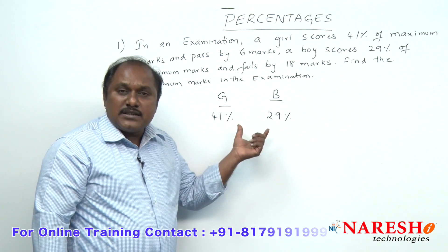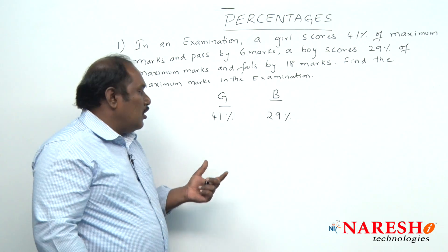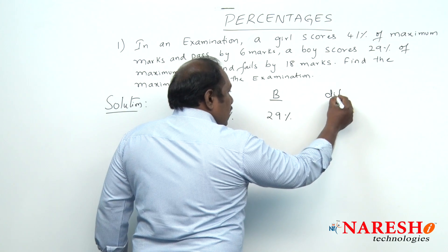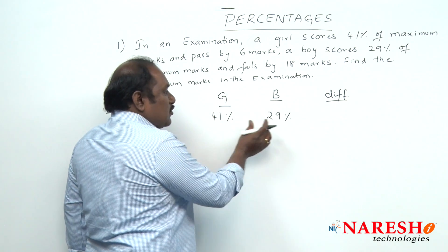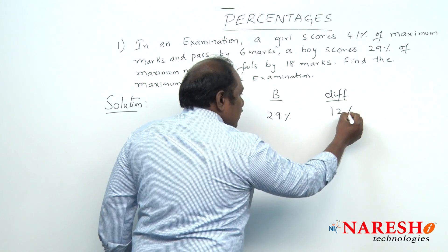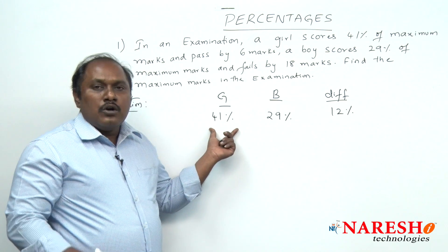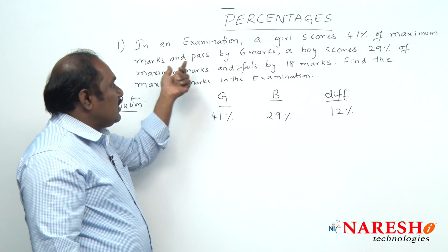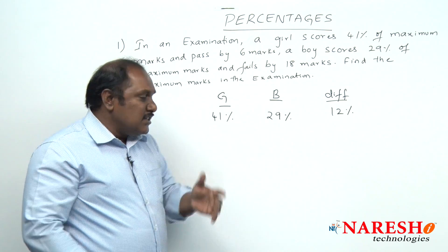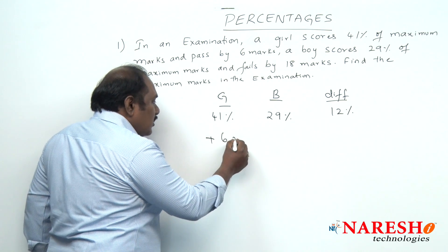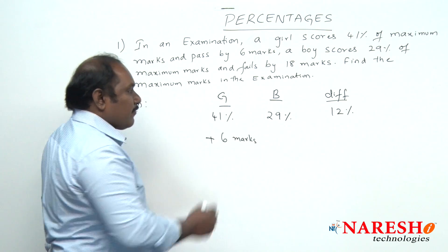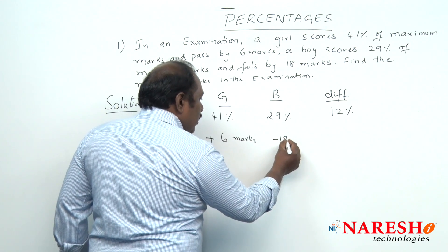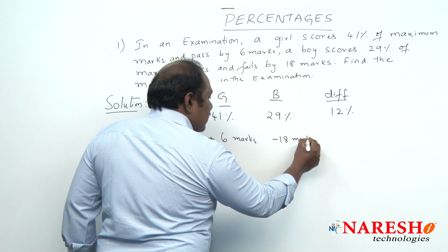What is the difference in their percentage? The difference in the percentage scored by girl and boy is 12%, that is girl scored 12% more than boy. In the question it is given girl passed by 6 marks, that is she scored 6 marks more than the marks required to pass. And boy failed by 18 marks, that is boy scored 18 marks less than the marks required to pass.